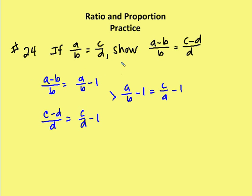So I can rewrite that as A over B minus B over B, which is the same as A over B minus 1. So I have A over B minus 1, same process with C minus D over D. I can rewrite that as C over D minus 1.